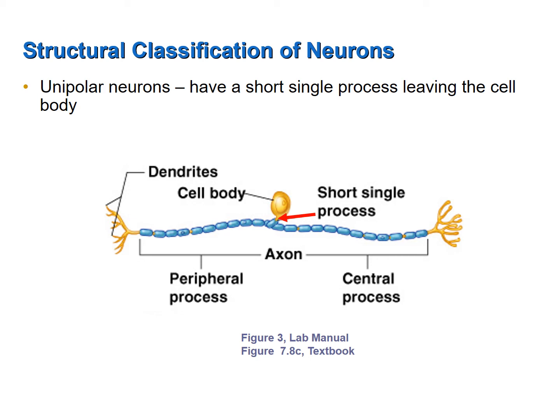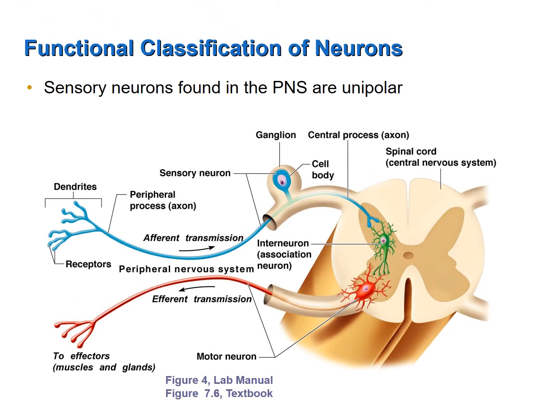It is unipolar. Where have we seen a unipolar neuron before? Going back to this figure, we can quickly answer that question. Remember those sensory neurons? They're also unipolar neurons. Here is the single process, and here are the two branches off of that process. All sensory neurons are also unipolar neurons.